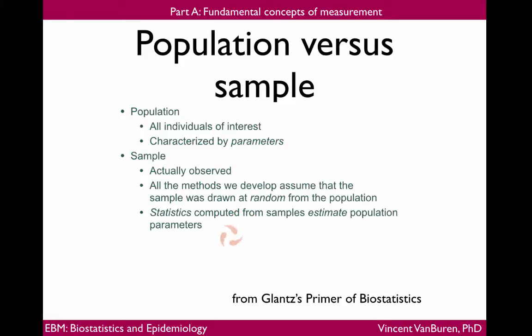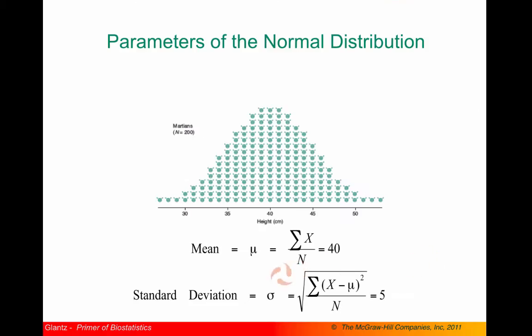Statistics computed from samples estimate the population parameters. Here are the parameters of the normal distribution, the mean and the standard deviation, given with the symbols μ and σ. We can see that the mean is just the simple average of the observed values in the distribution, and the standard deviation is given as the square root of the sum of the deviations from the mean squared divided by N.